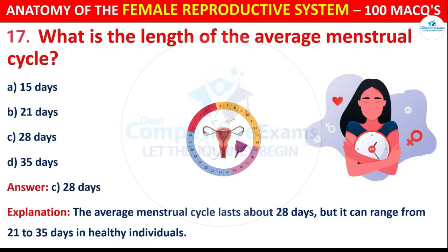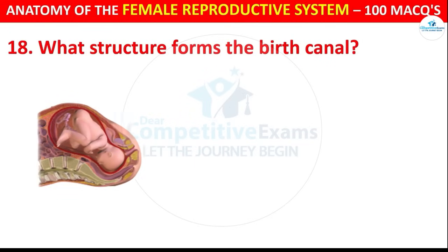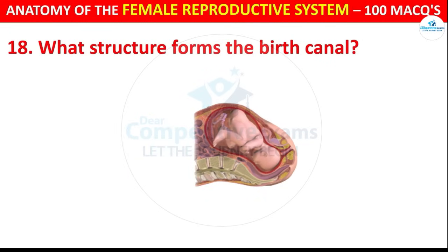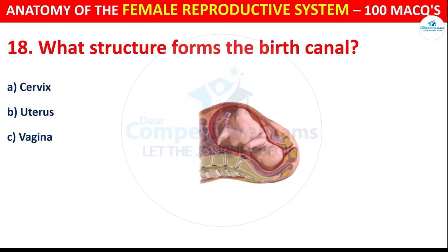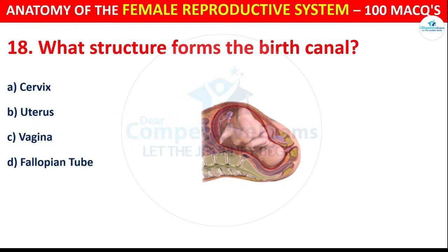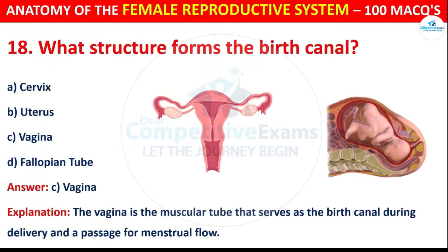Question number 18: What structure forms the birth canal? The correct answer is C, i.e. vagina. The vagina is the muscular tube that serves as the birth canal during delivery and a passage for menstrual flow.